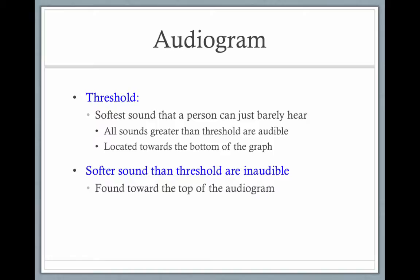Only thresholds are to be marked on the audiogram — only the lowest level that the child can hear and recognize as sound. So even if the child is responding at 50 decibels but is also able to respond at 20 decibels, only 20 decibels gets marked, not the 50 decibels.